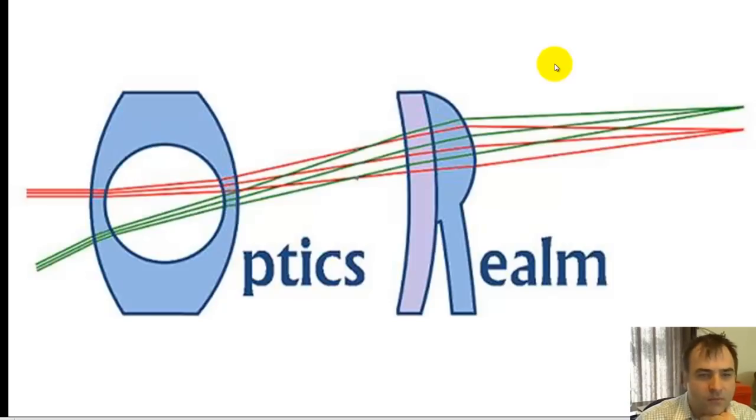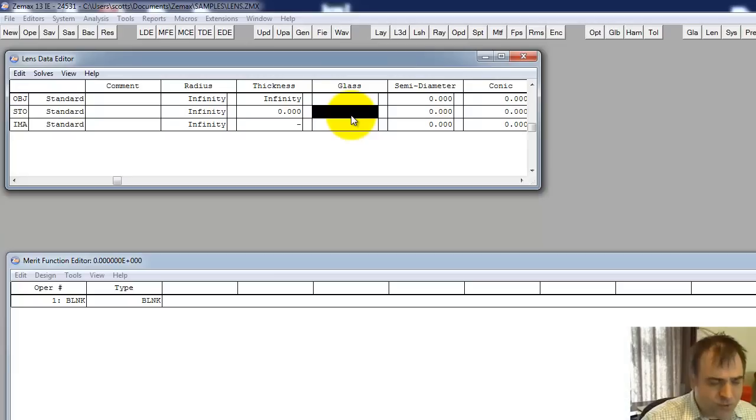I've had a few requests from coworkers and on YouTube on how to model custom glasses that aren't in ZMAX. So we're going to cover that today. The first glass I want to model is an older CDGM glass H-ZLAF75. I don't think that formulation is available anymore. I had a coworker who needed to model it so I wanted to take you through that.